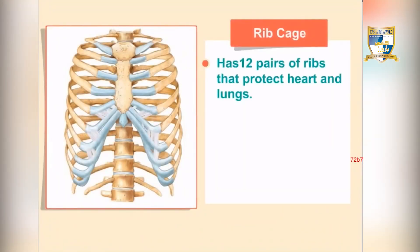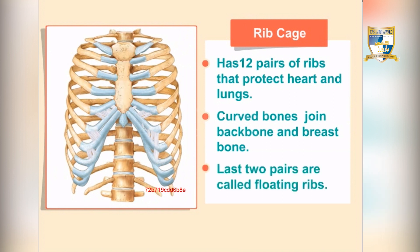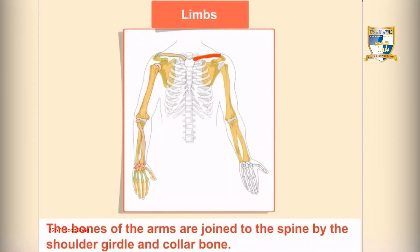Humans have 12 pairs of ribs that form a cage to protect the heart and lungs. The ribs are curved bones joined to the backbone and the breastbone. The last two pairs of ribs are called floating ribs because they are joined only to the backbone.